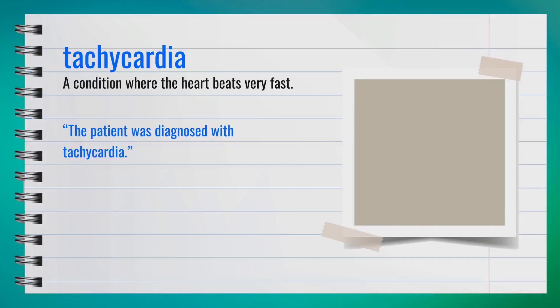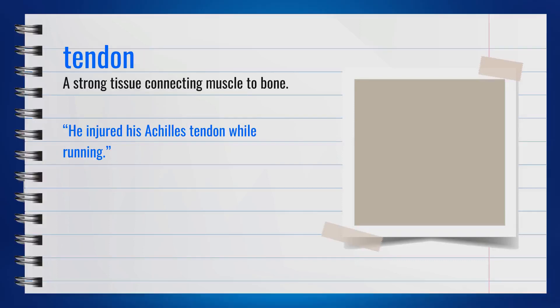The word tachycardia is a noun, spelled T-A-C-H-Y-C-A-R-D-I-A. It is a condition where the heart beats very fast. A synonym for tachycardia is rapid heartbeat. For example, the patient was diagnosed with tachycardia. In summary, tachycardia refers to an abnormally fast heartbeat.